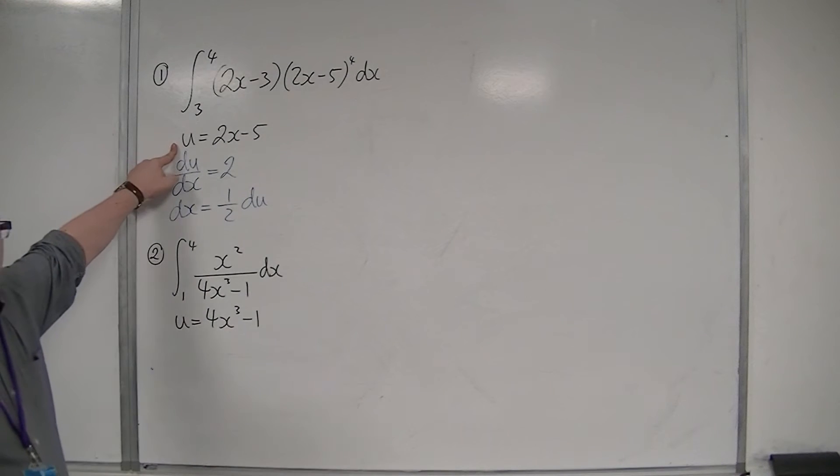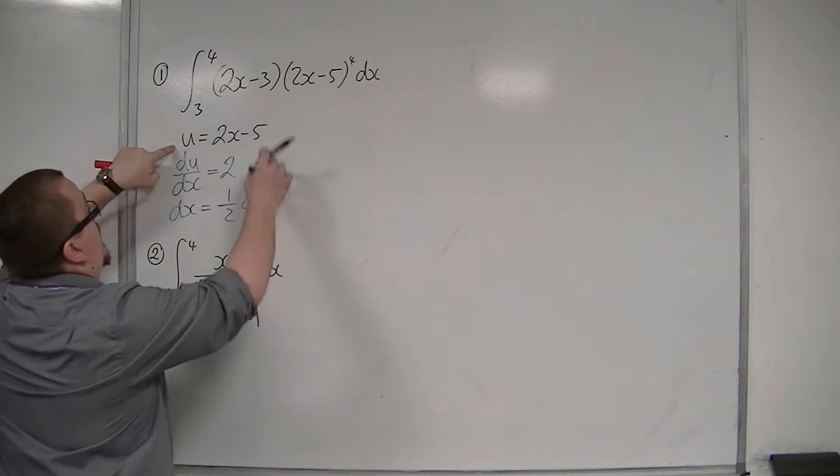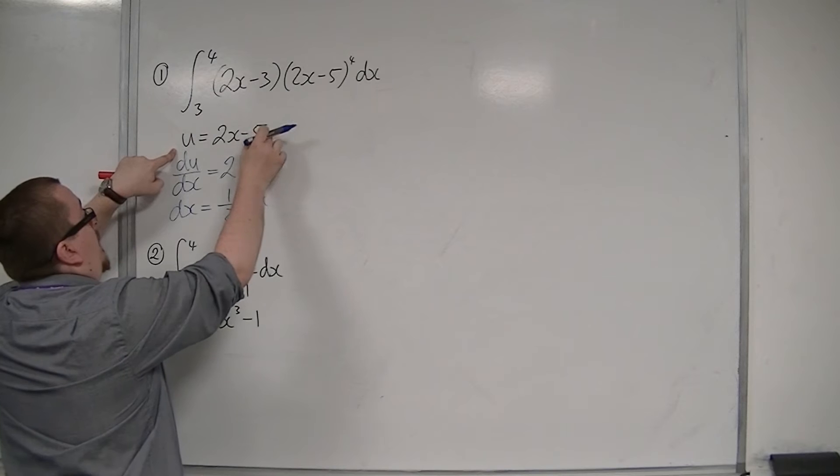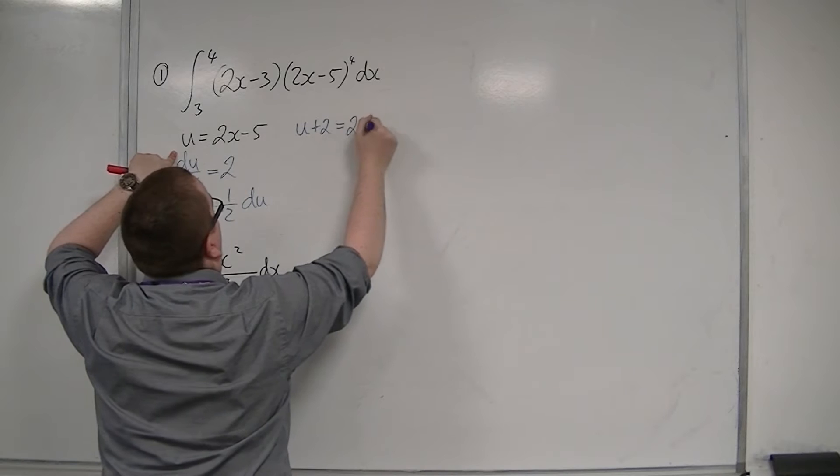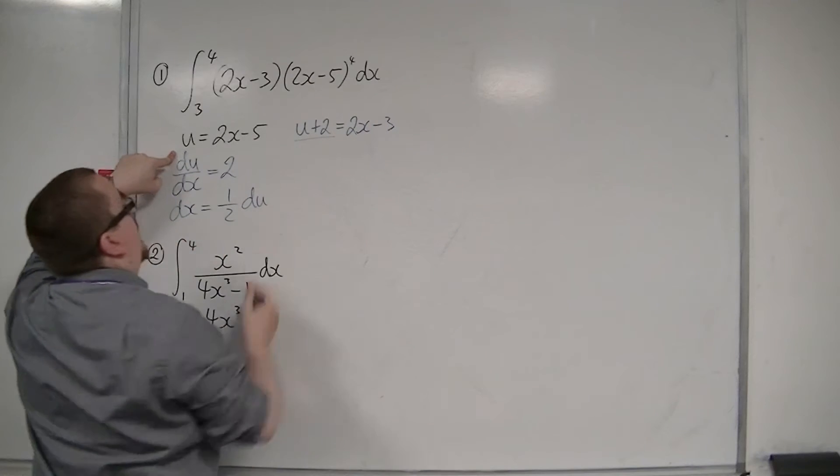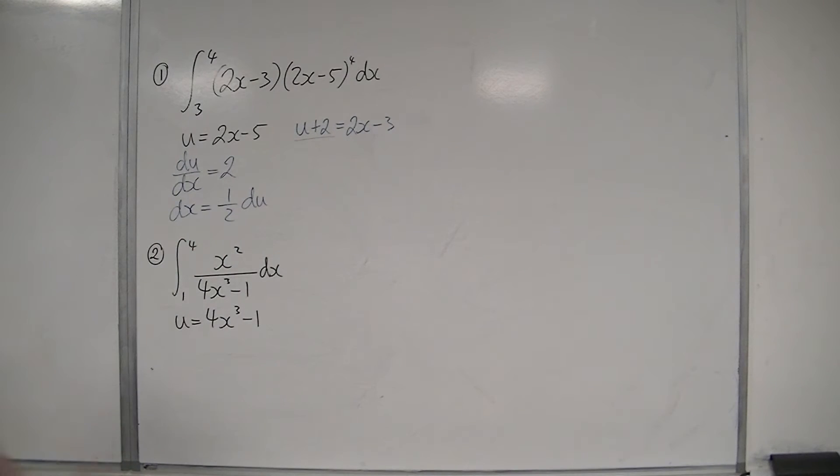So I look at u is equal to 2x minus 5. This is similar to a previous video's question, where if I added 2 to 2x minus 5, I'd get to 2x minus 3. So I add 2 to both sides, I then have a replacement for the 2x minus 3, and that's u plus 2.